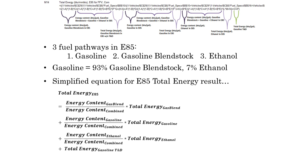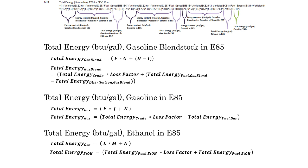So we have the energy content of gasoline blendstock divided by the combined energy content, then multiplied by total energy of gasoline blendstock, then added to the same routines for gasoline and ethanol. There are also terms at the end of the formula for gasoline transportation and distribution. For each pathway there is a feedstock production term and a fuel production term. One T&D term appears in the gasoline blendstock equation, and the other terms appear at the end of the E85 formula. These T&D terms are a good place to start tracing upstream in GREET Excel.